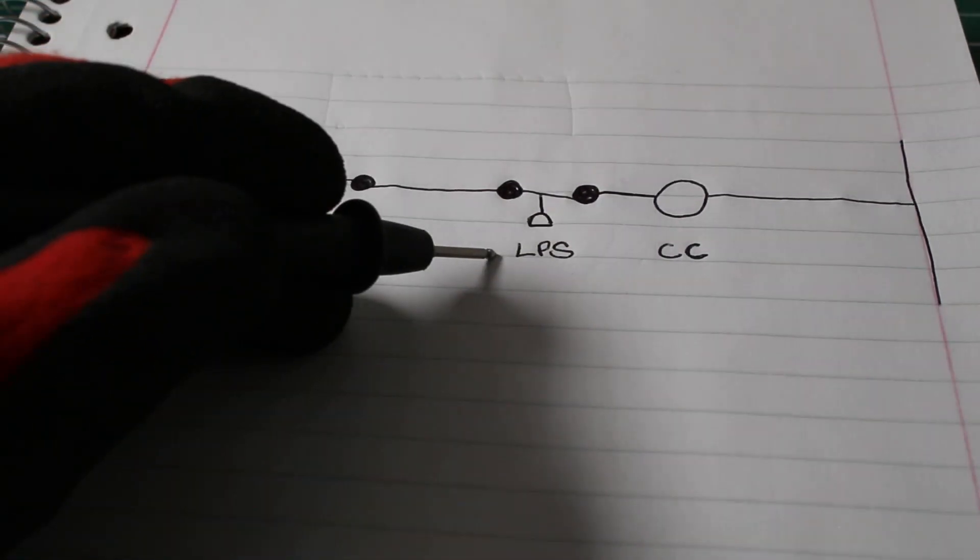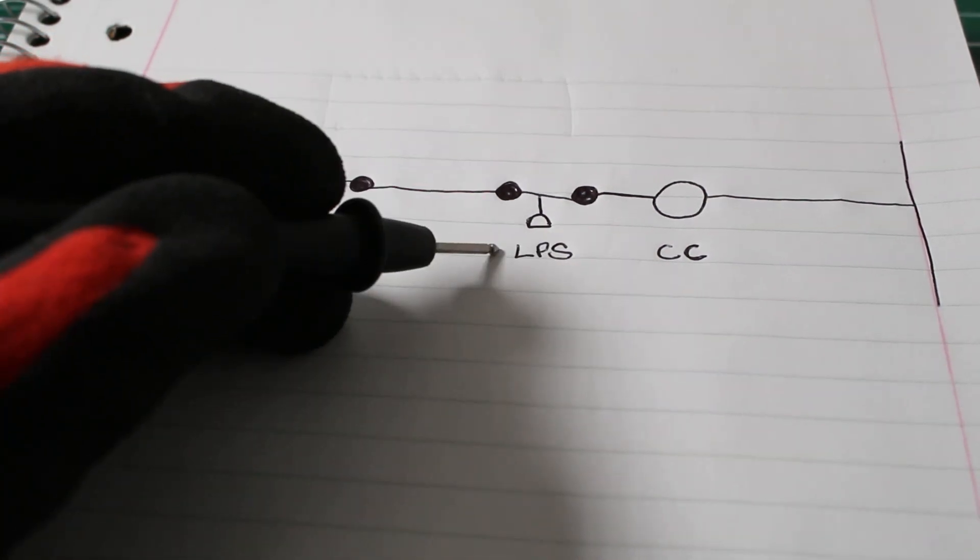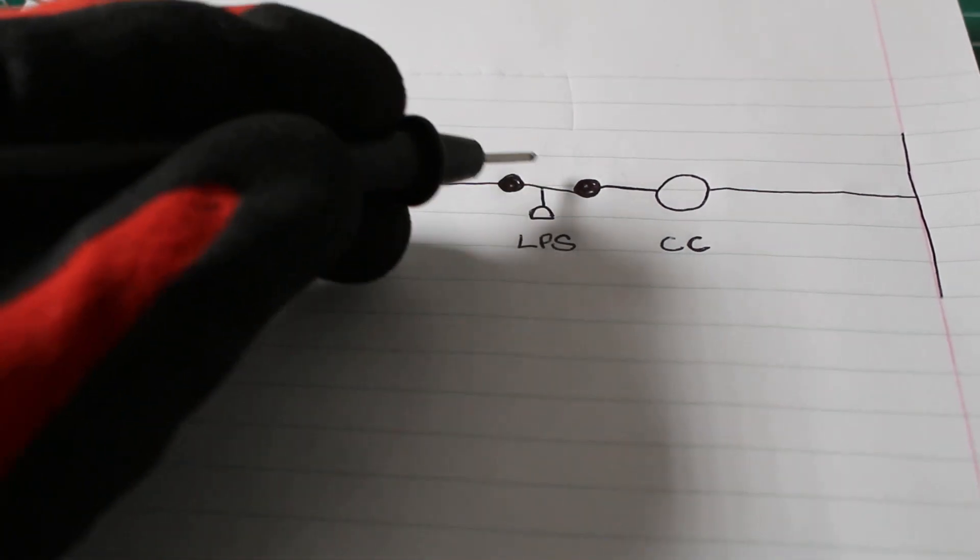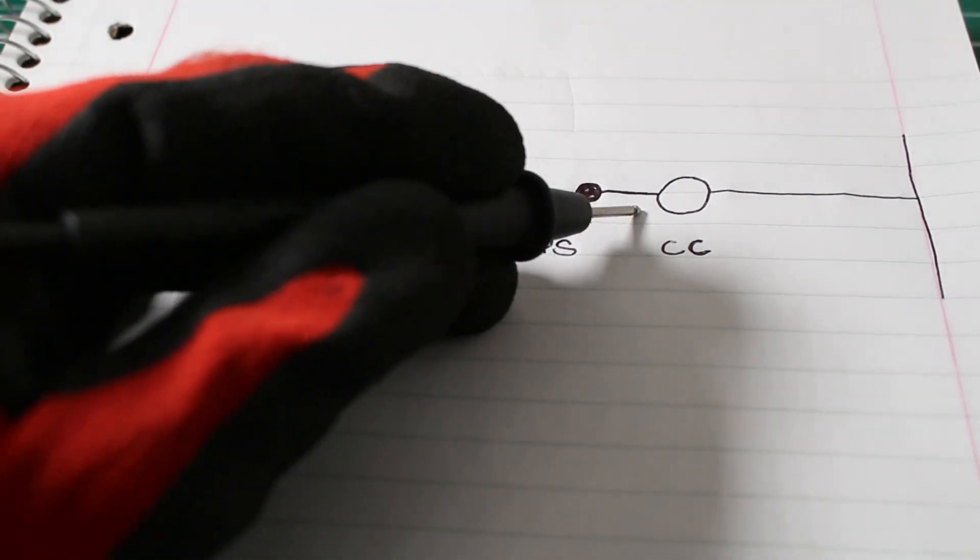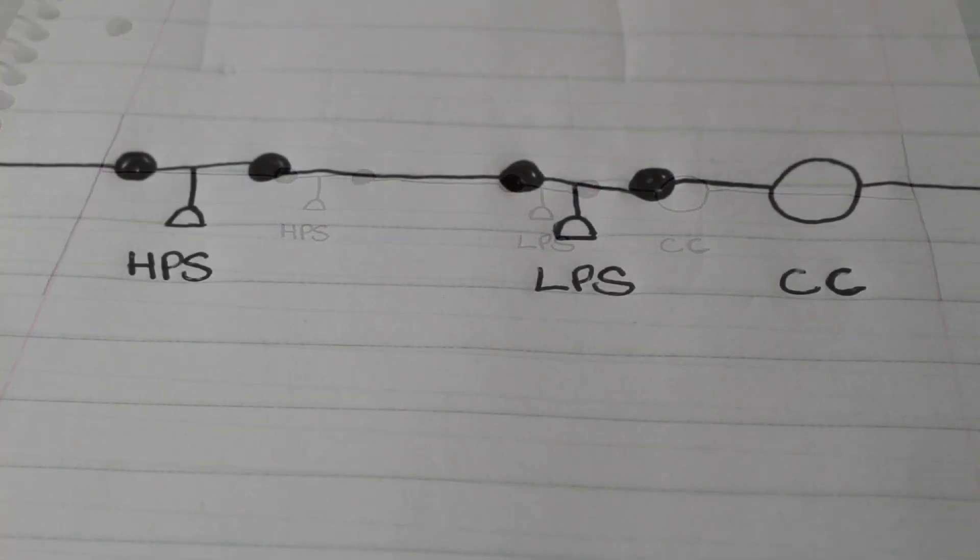Same thing for the low pressure switch, except if we have a low pressure situation. This switch will open and stop the power going to our coil, so we cannot complete our circuit and shut our equipment down. Pressure controls operate with the principle same as a switch and they are NC, which stands for normally closed.